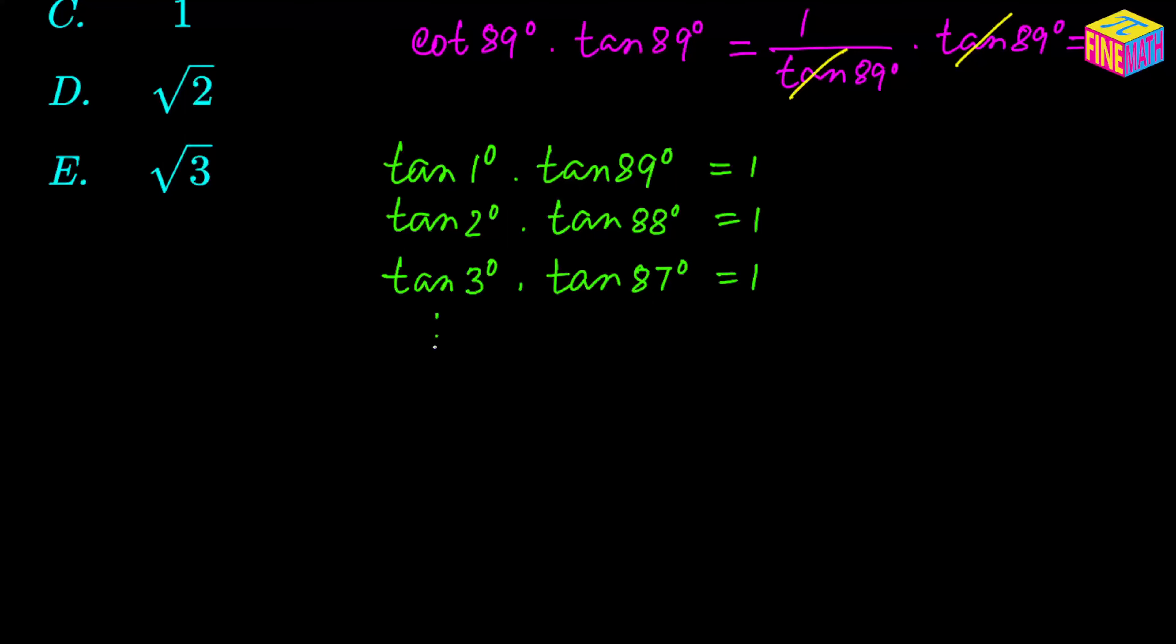And similarly, if we keep doing this, we will end up with a factor like tangent of 44 degrees times tangent of 46 degrees that will also become 1, and then the only other factor remaining is tangent of 45 degrees.